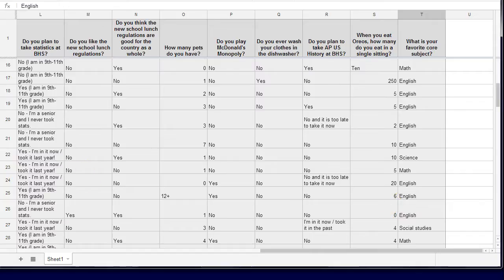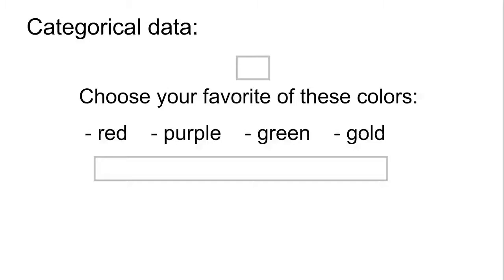If you want to boil that down, you're going to want to create it into some sort of set of counts, set of frequencies, or a frequency chart. We're going to look at an example using favorite color. Imagine in the survey, 50 people took the survey, and they had to choose one of these four colors: red, purple, green, or gold.